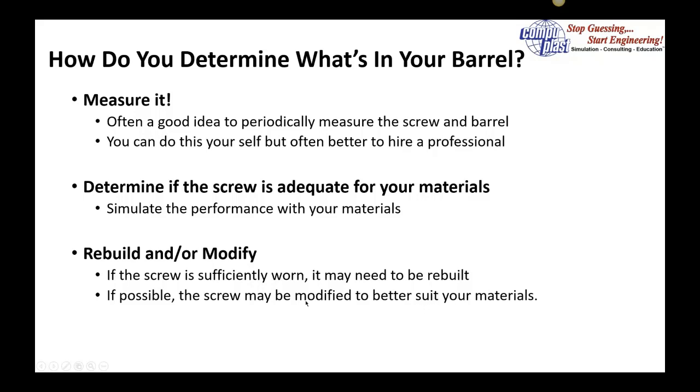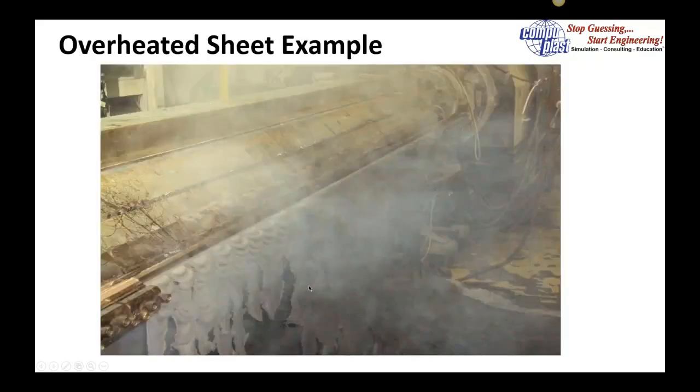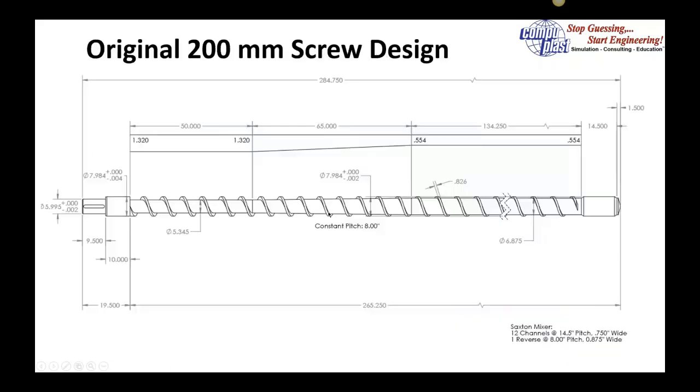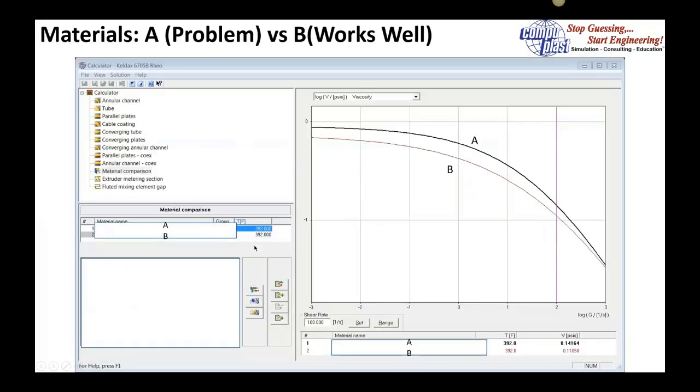I want to give an example of this. We showed earlier this overheated sheet example. Here I have a sketch of the screw design that was used—basically a conventional extruder with a mixer on the tip. The customer told us they had two materials processing on this extruder: material A and material B. A was a problem, but B worked relatively well.